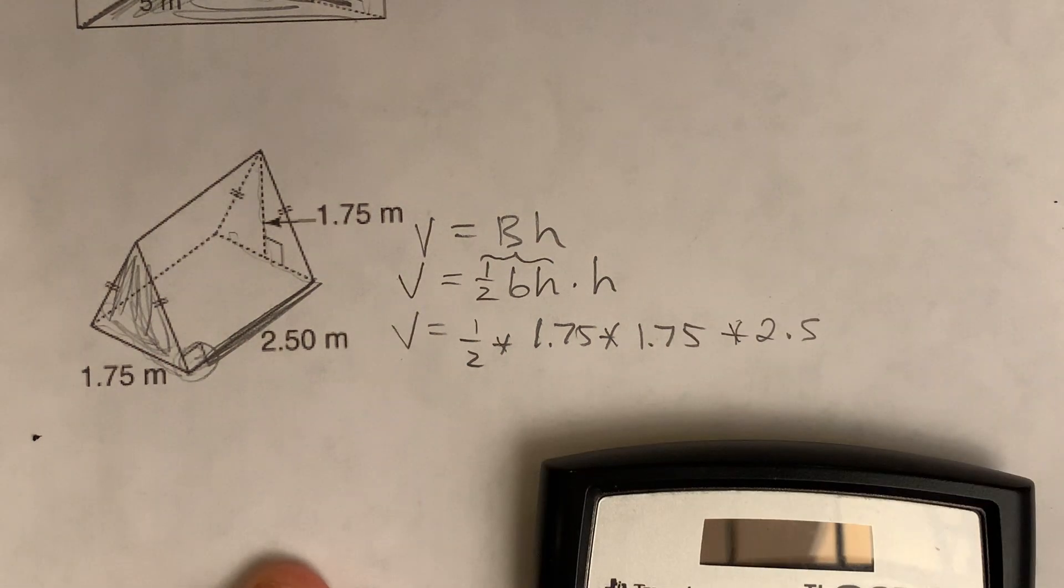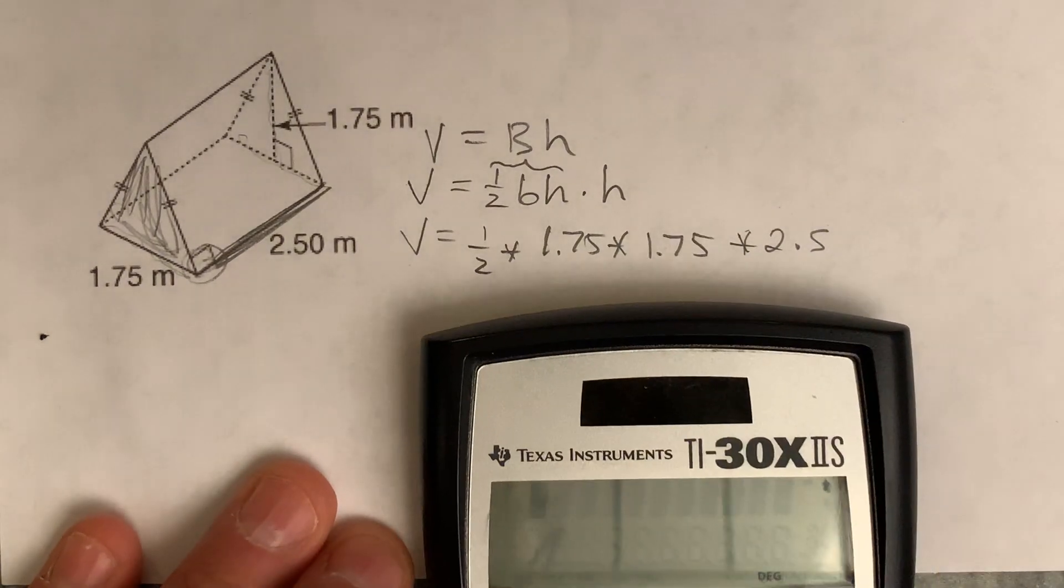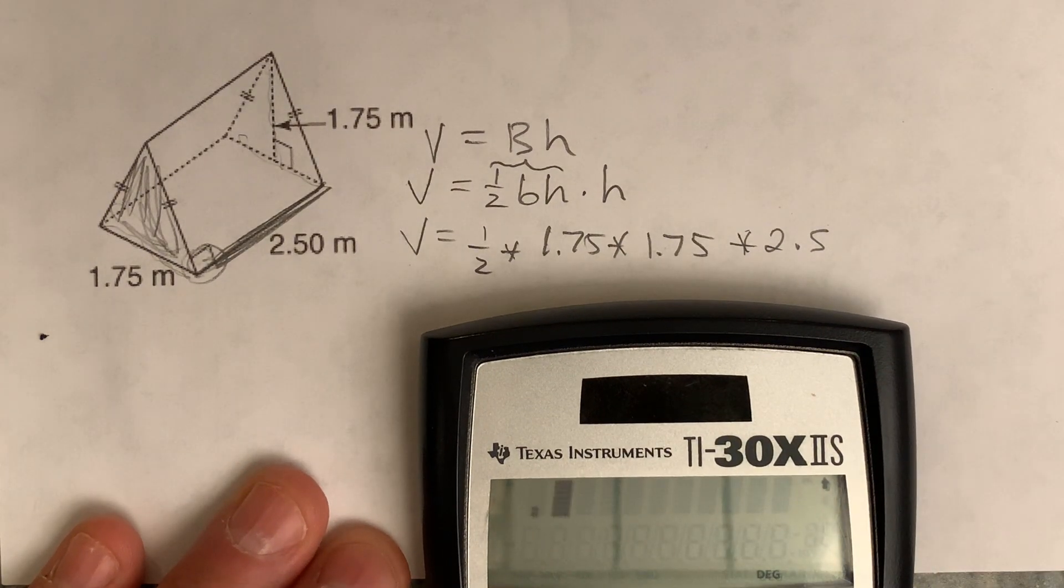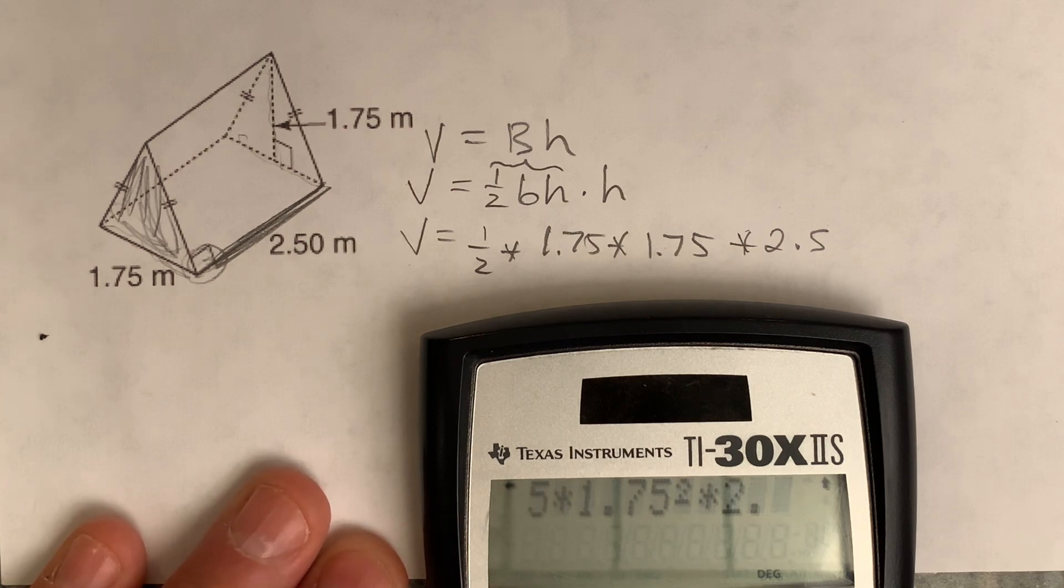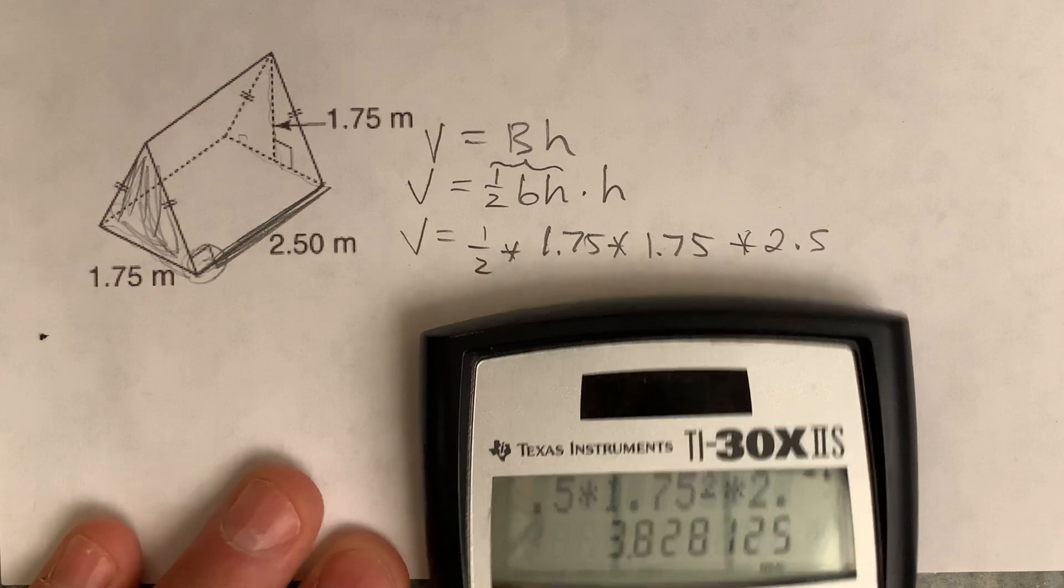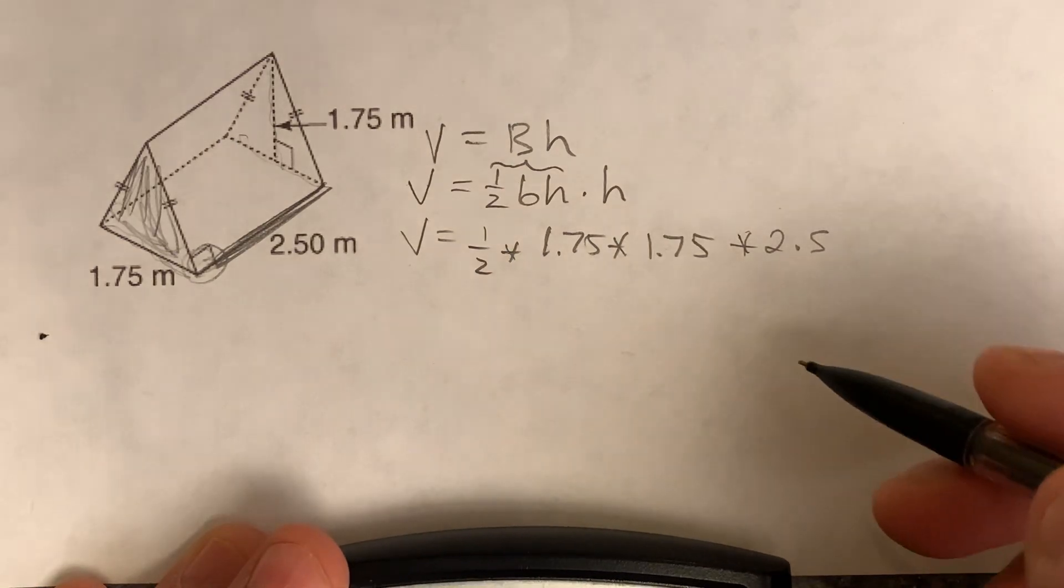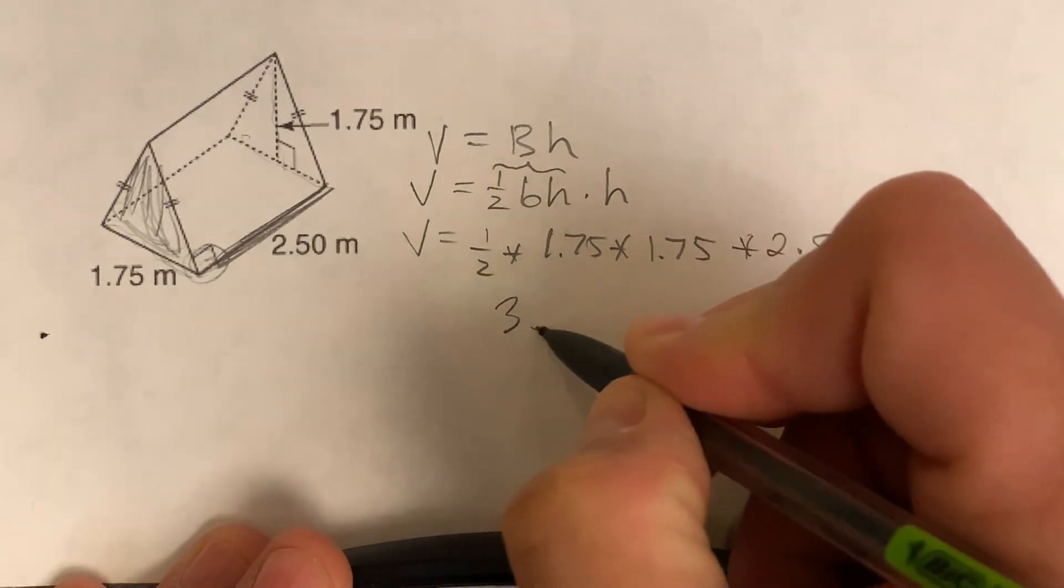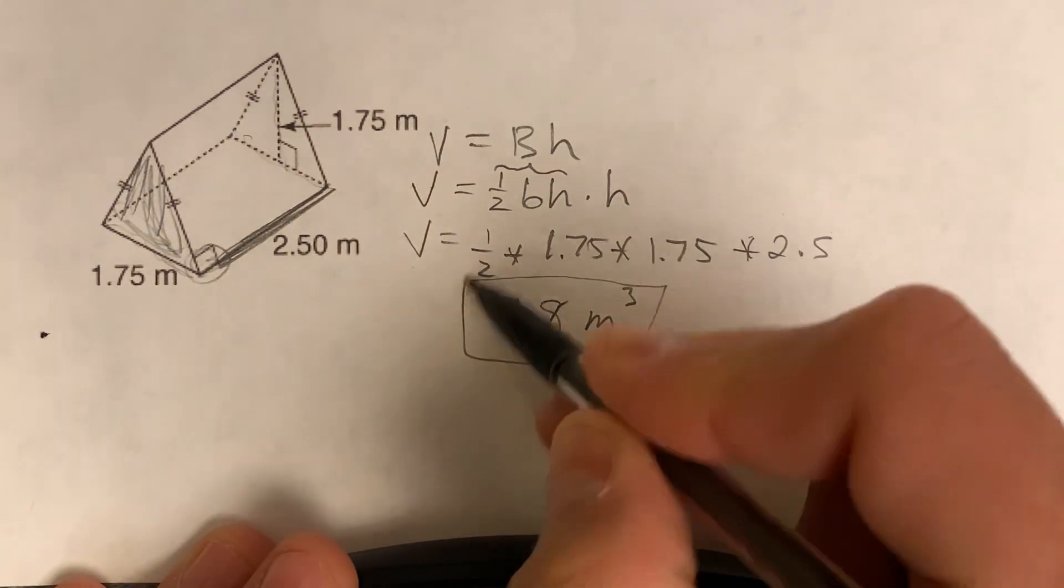That's a tough one to do in your head, so I'm going to go ahead and type that one all out too. Let's move it up a little bit so we can get the calculator in there. There we go. So we get 0.5. It's 0.5 times 1.75. I could just do squared there because there's two of them, right? So squared times 2.5. That's a big number. Lots of decimals there. So let's just go ahead and put in there. Let's go to the nearest tenth. So 3.8 would be the volume for that one. 3.8 meters cubed is the volume for that one.